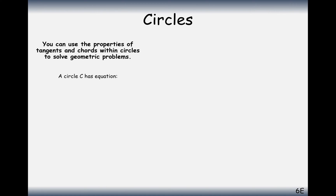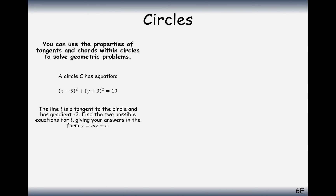Let's have a go at a slightly trickier question. We have the equation of a circle: (x - 5)² + (y + 3)² = 10, and we have a tangent to the circle with a gradient of minus 3. We need to find two possible equations for L, giving the answer in the form y = mx + c.